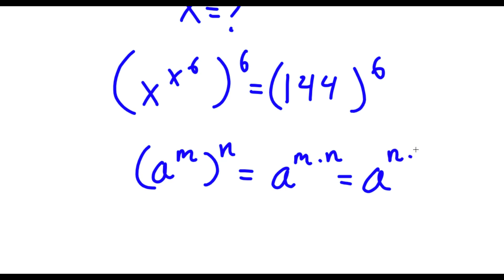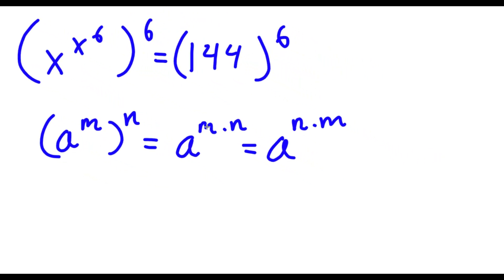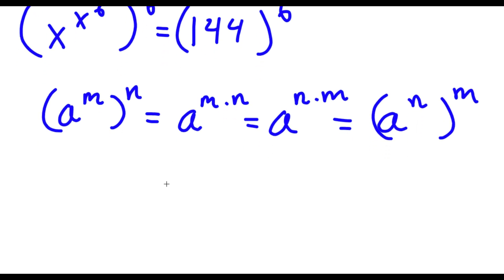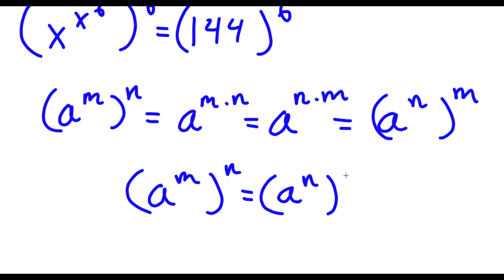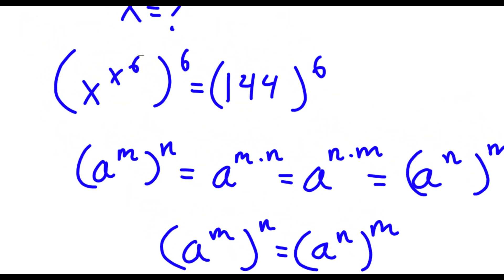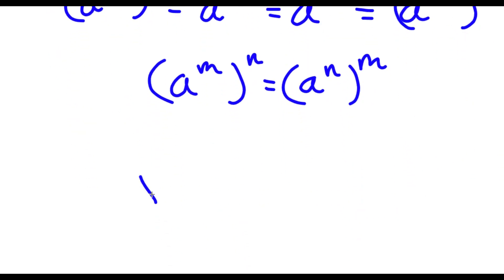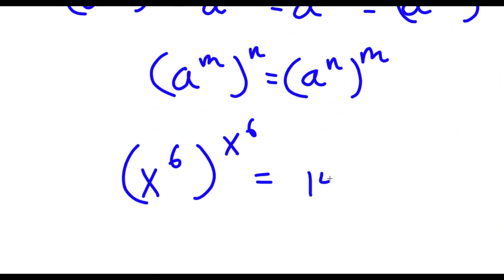And m and n are interchangeable, meaning this is the same as a to the power of n times m. So a to the power of m to the power of n equals a to the power of n to the power of m. So in this case we have x to the power of x to the power of 6, all to the power of 6. We can think of x to the power of 6 as m and 6 as n, so we can switch these two places. Now we have x to the power of 6 to the power of x to the power of 6, which is equal to 144 to the power of 6.